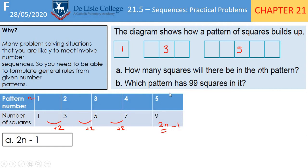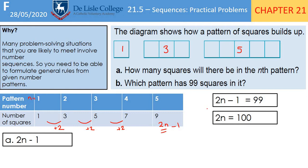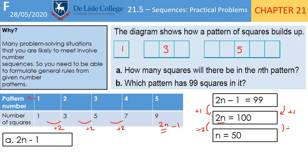Which pattern has 99 squares? We use our nth term and write it as a linear equation: 2n − 1 = 99. We need to find n, so we do the inverse — add 1 to both sides to get 2n = 100, then divide both sides by 2 to get n = 50. So it's the 50th pattern. We can check: 2 times 50 is 100, subtract 1 is 99. Correct.